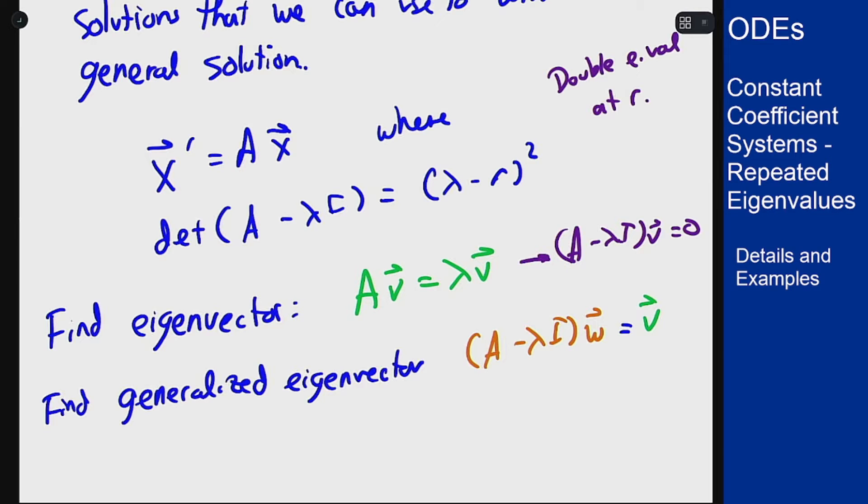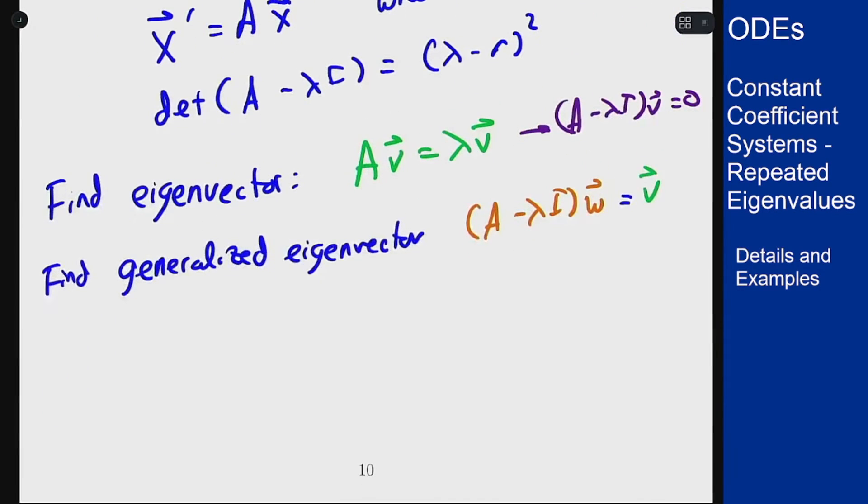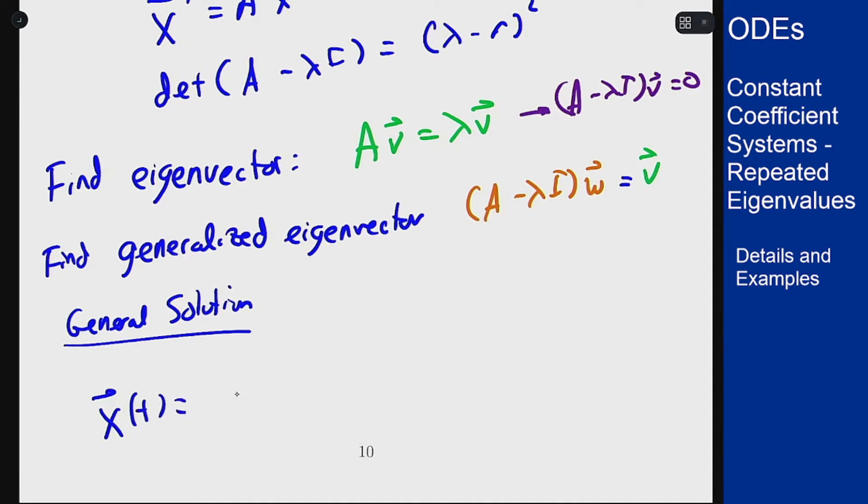Once we have these vectors, we can then write a general solution as x of t is c1 times our first solution, which is v e to the rt, and then c2 times our second solution, which will be v times t e to the rt plus w e to the rt. And note that the c2 applies to both of these terms here, not just one of them. It's the same constant for both of these terms. These two terms are linked and that's what will make this actually solve the differential equation.